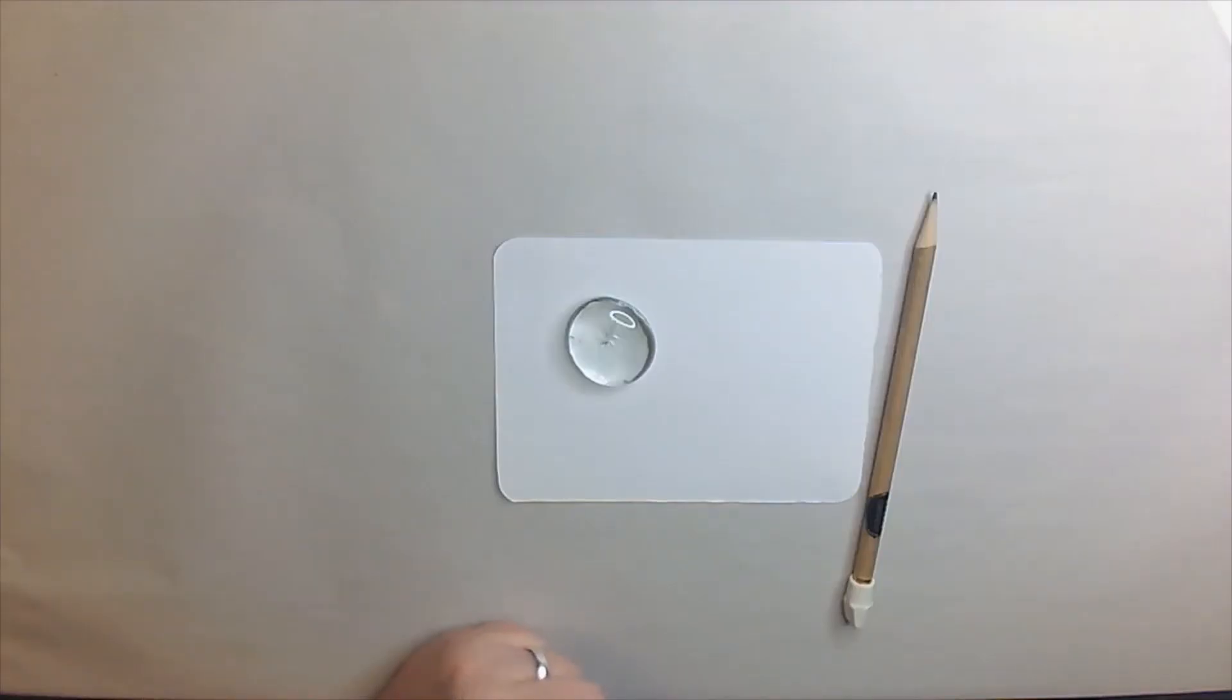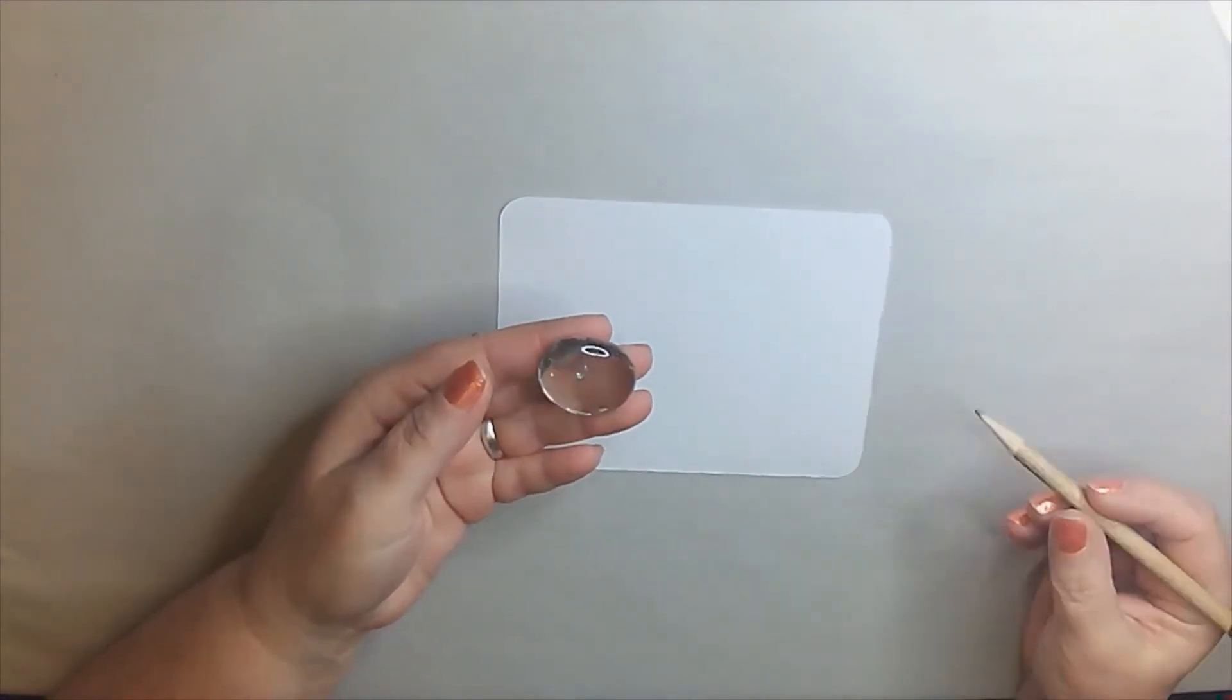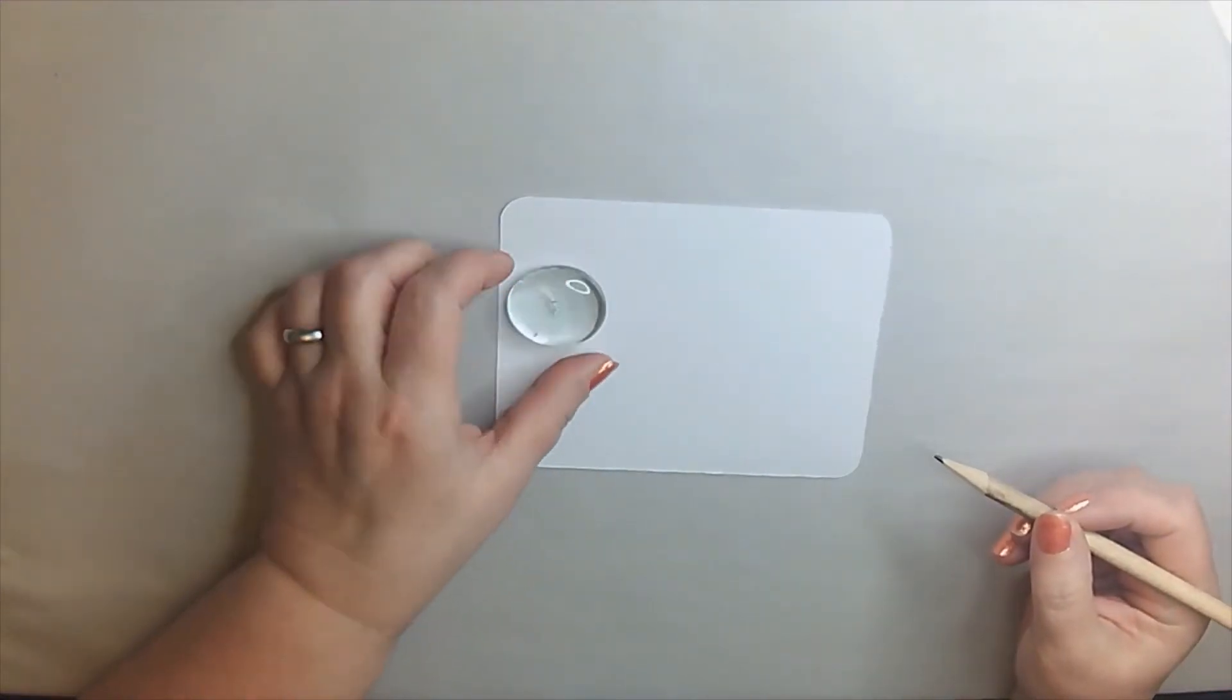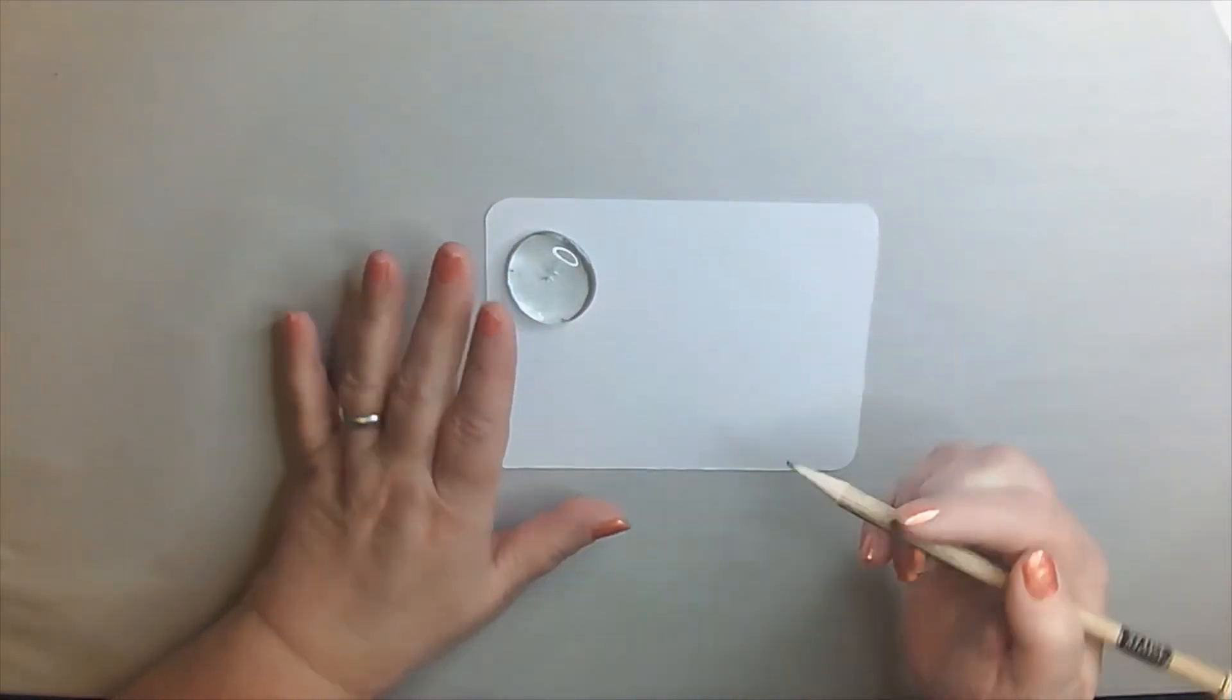All right, everyone. Here we are. We have a piece of paper. And I went ahead and grabbed the stone. That's not a complete circle. It's more like a cross between a circle and an oval shape. And a pencil.